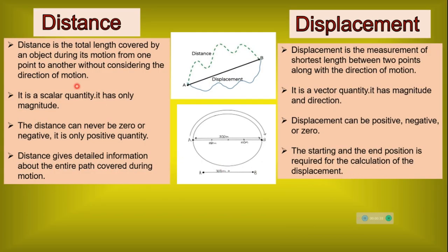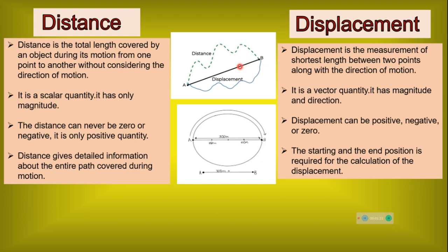Distance is the total length covered by an object during its motion from one point to another, without considering the direction of motion. An object can move from A to B by taking several paths. The distance will be the total length covered by the object in going from A to B. It is a scalar quantity — it has only magnitude. The distance can never be zero or negative; it is only a positive quantity. Distance gives detailed information about the entire path covered during the motion.